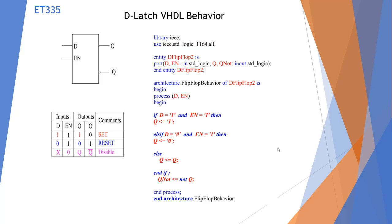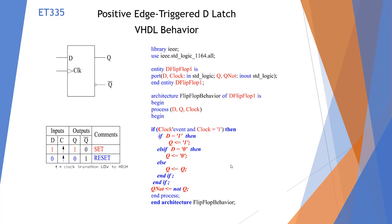Here we have a standard D latch — this is level triggered. Going through the truth table: if data is 1 and enable is 1, we get a 1 on output Q. If enable is 1 and D is 0, we get 0. If neither condition is true, no change. Q and Q_NOT must be kept opposite.